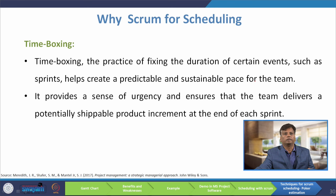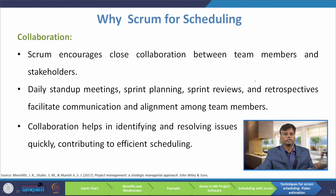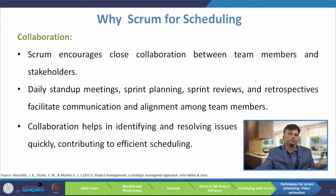The next reason is customer feedback: regular feedback from stakeholders is integrated through sprint reviews. At the end of each sprint, the team demonstrates completed work and stakeholders provide feedback. Transparency is also emphasized — the product backlog, sprint backlog, and progress are visible to all team members and stakeholders, helping identify potential issues early. Time boxing fixes the duration of events like sprints, creating a predictable and sustainable pace, and collaboration through daily stand-ups, sprint planning, and retrospectives facilitates communication and efficient scheduling.